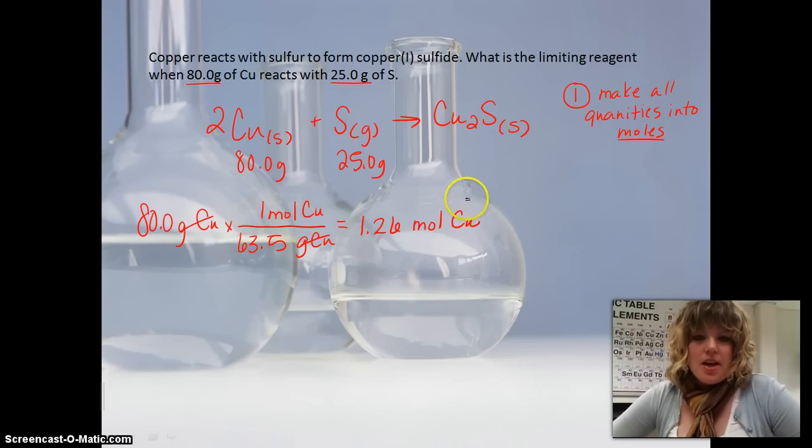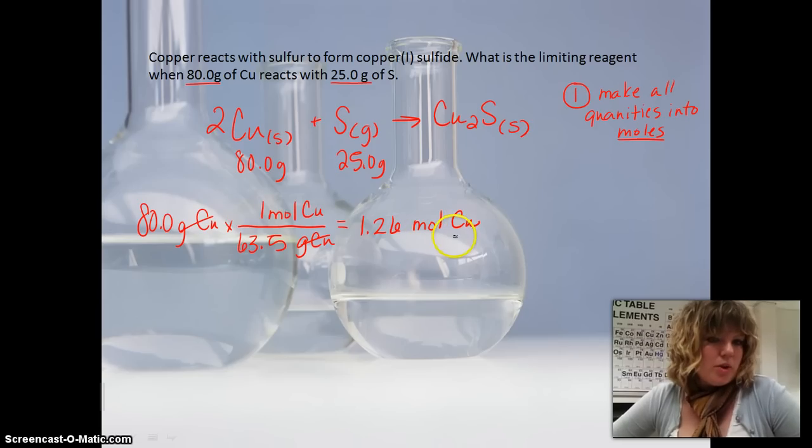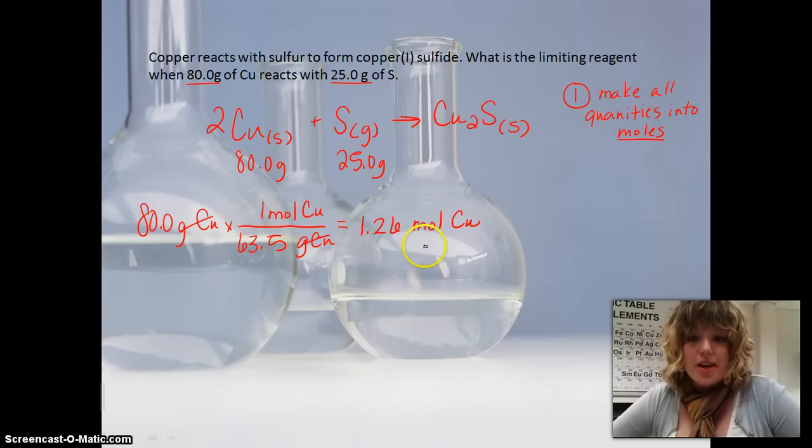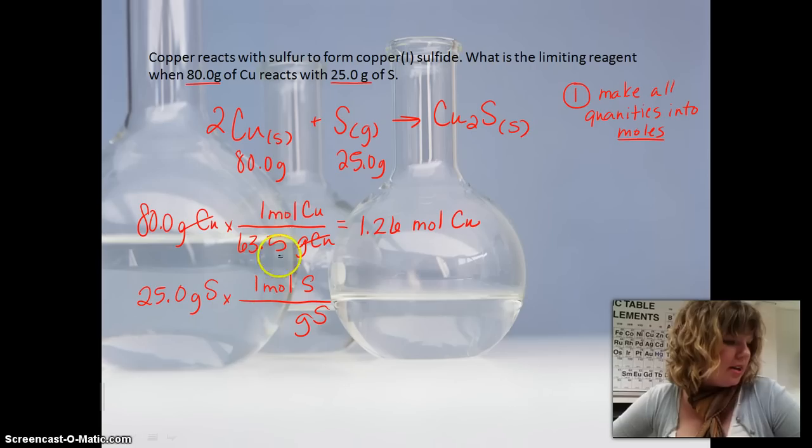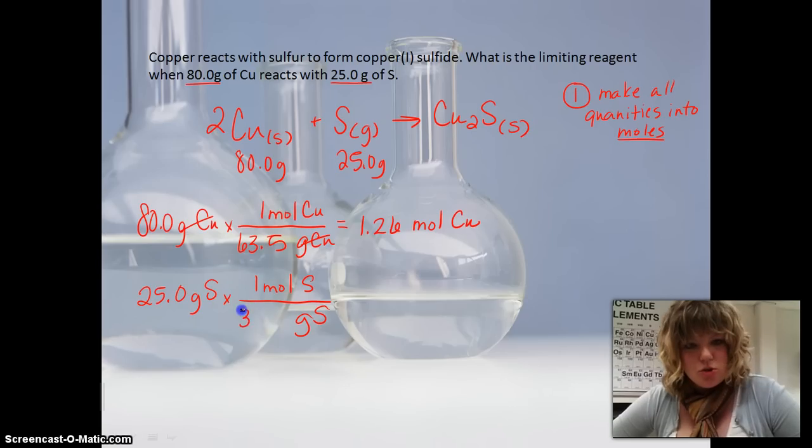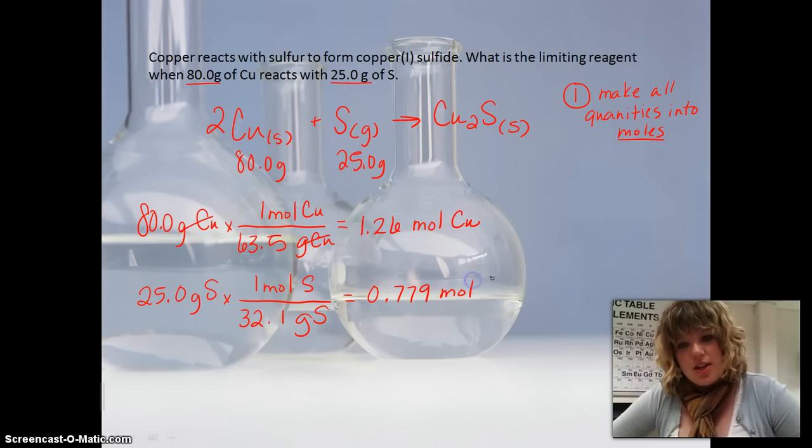And this right here goes right along with your assignment for numbers 25 and 26 in your book. So you can use this example to help you out with that. So now we need to take this 25 grams of sulfur, and we need to take it to moles. So we know moles of sulfur is going to go on top. Grams of sulfur goes on bottom. Molar mass is 32.1 grams. Divide those two, and we'll get 0.779 moles of sulfur.